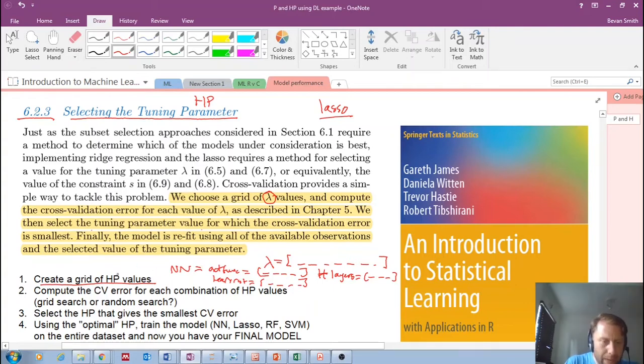The second step is to compute the cross validation error for each value of your hyper parameter. In my own words, compute the cross validation error for each combination of hyper parameter values. Although I'm making a follow-up video showing that random search is often preferred to exhaustive grid search, the point is for each combination that you select...